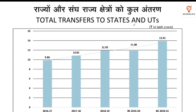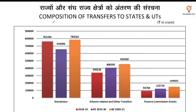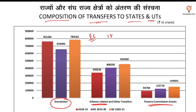The total transfer from the central government to states and union territories in 2020-21 is estimated at 13.91 lakh crore. The composition includes devolution, centrally sponsored schemes, and finance commission grants. The 15th Finance Commission recommended that 41% of net receipts should be transferred to the states.